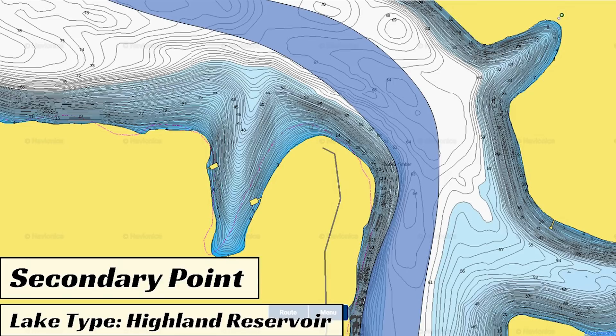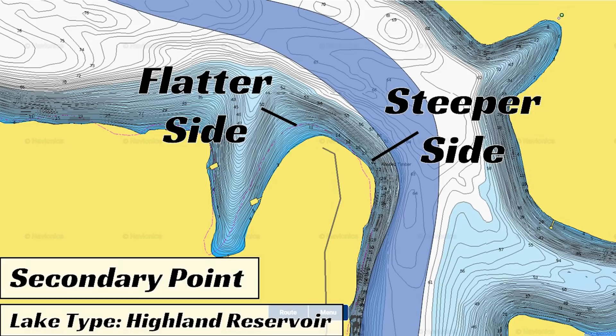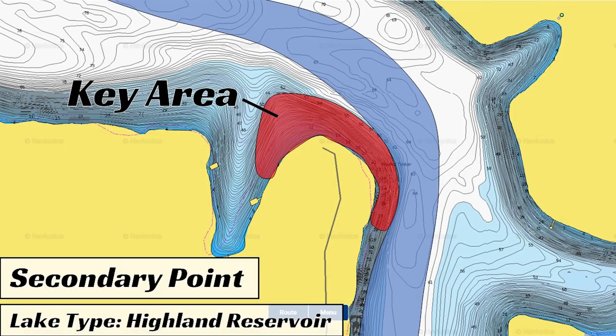On the right side of the secondary point, you have a steeper slope to the bank because of the creek channel. And on the left side, you have a more gradual slope to the point. The transition between the steeper section of bank and the shallower, flatter section of the bank creates a key area the bass will set up in during the wintertime.